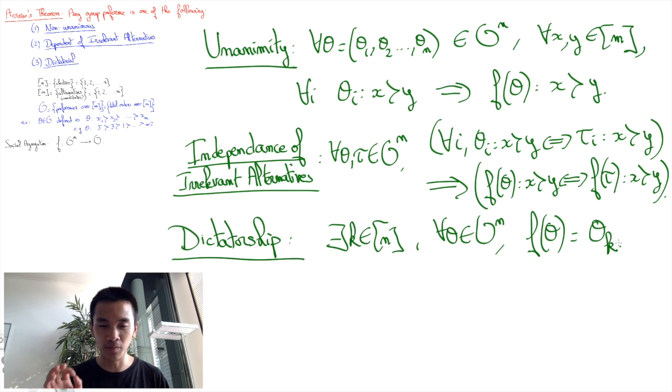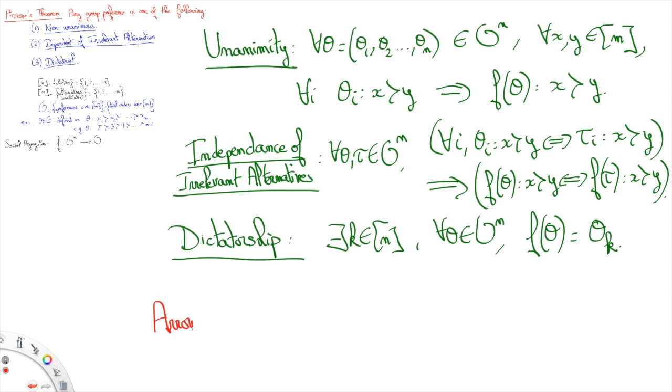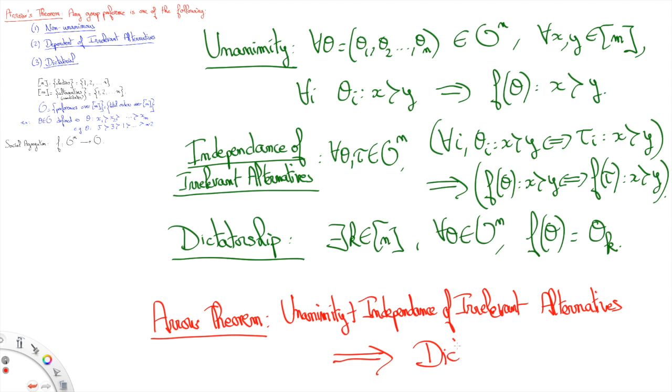So hopefully now you have all the elements to perfectly understand at least the formal statement of Arrow's theorem, which I recall asserts that if there are at least three alternatives, then no social aggregation is simultaneously unanimous, independent of irrelevant alternatives, and non-dictatorial. Or as I prefer to say it, the only social aggregation that's both unanimous and independent of irrelevant alternatives is dictatorship.